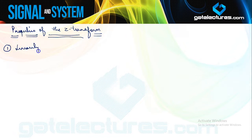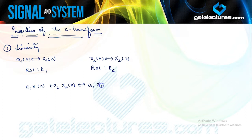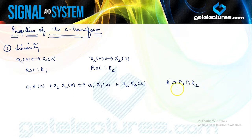The first property is linearity. If Z-transform of x₁(n) is X₁(z) with ROC R₁, and Z-transform of x₂(n) is X₂(z) with ROC R₂, then for a₁x₁(n)+a₂x₂(n), the Z-transform is a₁X₁(z)+a₂X₂(z) with ROC containing at least R₁∩R₂.